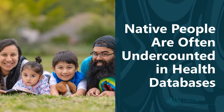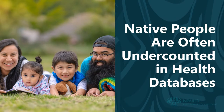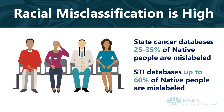Unfortunately, American Indian and Alaska Native people are often undercounted in state, federal, and local public health databases, where large amounts of data are kept. One reason for this is that Native people are frequently mislabeled in databases as being another race. In the Pacific Northwest, like other regions in the U.S., racial misclassification of Native people is relatively high. For example, in state cancer databases, 25 to 35 percent of Native people are mislabeled as being another race. When it comes to databases that track some sexually transmitted infections, up to 60 percent of Native people are mislabeled as being another race.